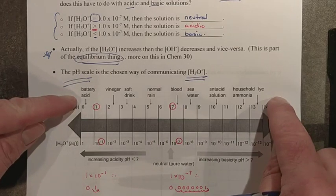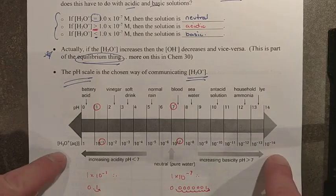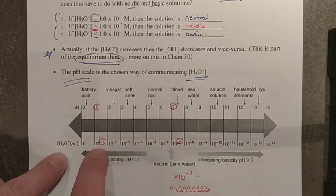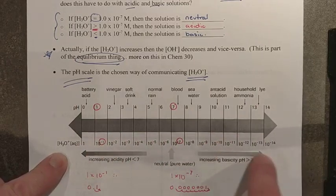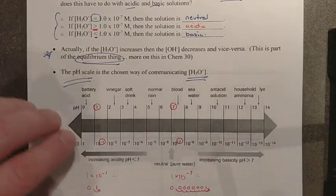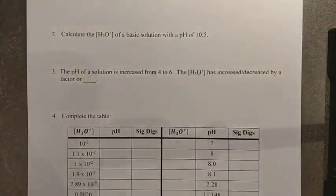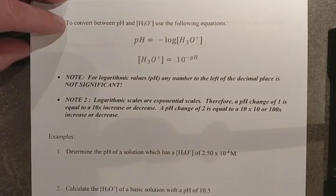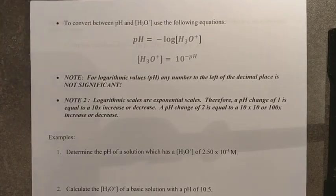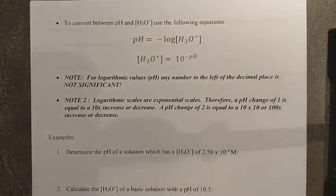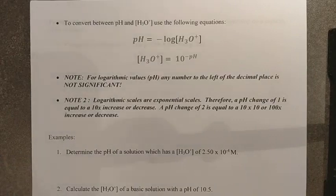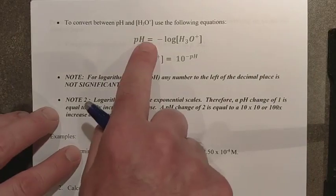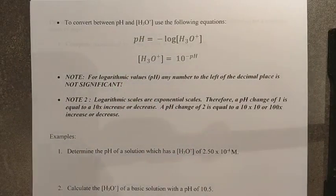Look back at this diagram often. pH is a way of communicating large or very small amounts of hydronium in a solution. We can use a couple of different formulas to move back and forth between pH and hydronium. pH is the easy numerical way of describing acidity or basicity, but hydronium is the stuff we need because that's the mole per liter concentration.